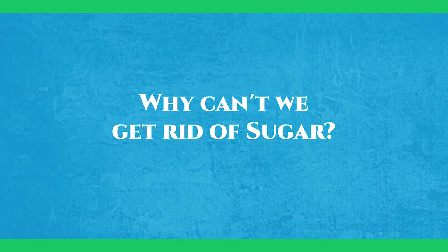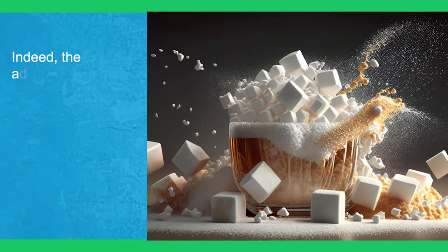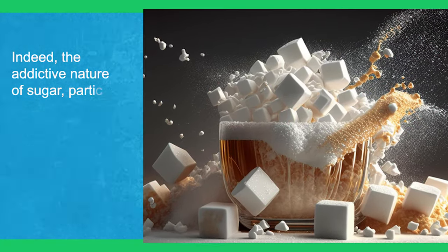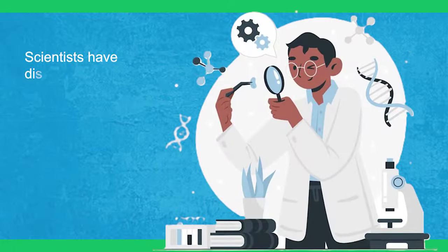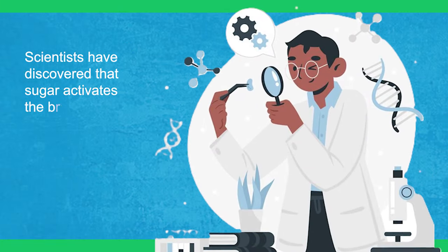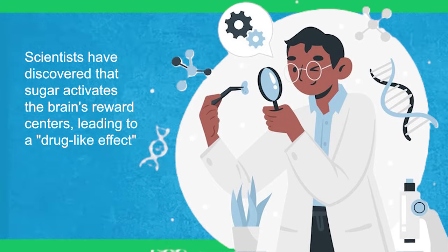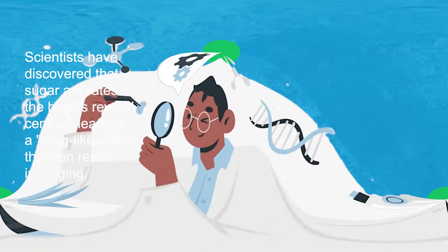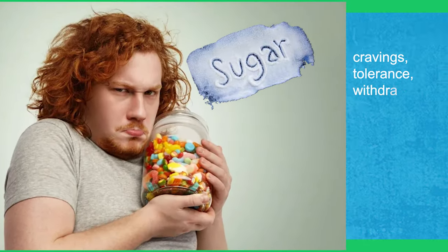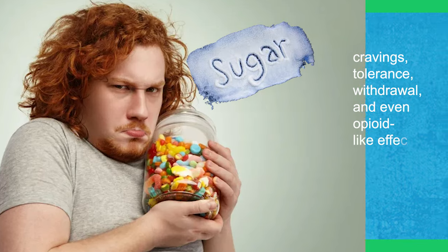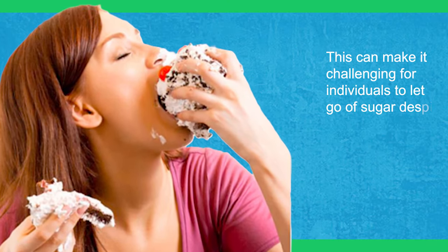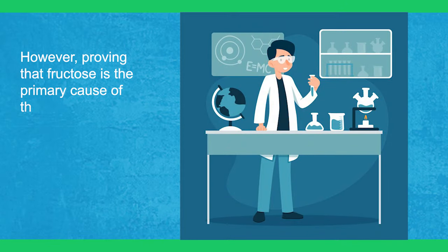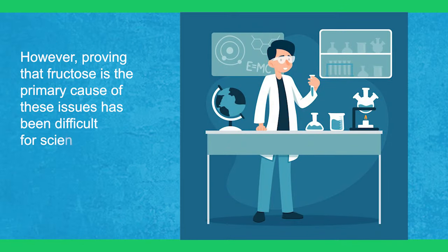Why can't we get rid of sugar? The addictive nature of sugar, particularly fructose, is a fascinating topic. Scientists have discovered that sugar activates the brain's reward centers, leading to a drug-like effect that can result in intense cravings, tolerance, withdrawal, and even opioid-like effects. This can make it challenging for individuals to let go of sugar despite being aware of its dangers. However, proving that fructose is the primary cause of these issues has been difficult for scientists.